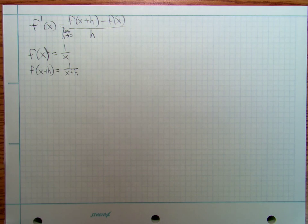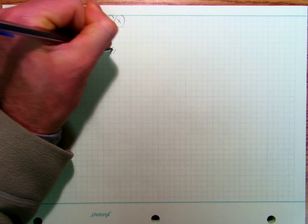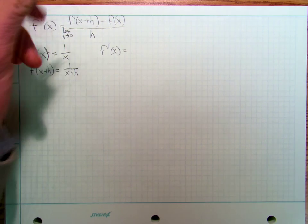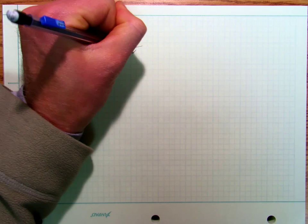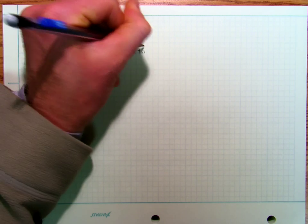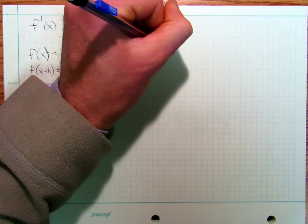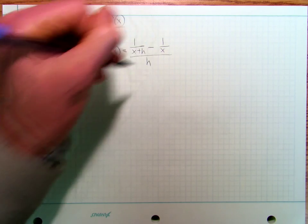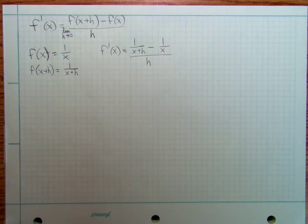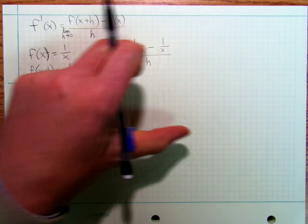And so then I plug it into my formula, and I get f prime of x is equal to 1 over x plus h minus 1 over x, all of that over h. Well, now I've got to find common denominators up here.